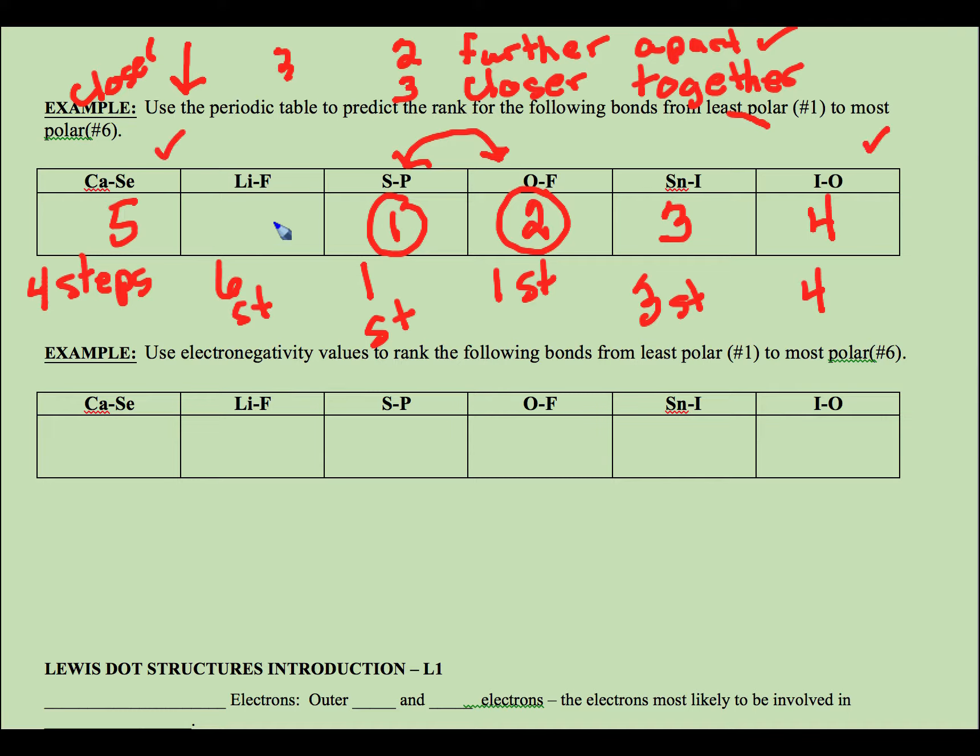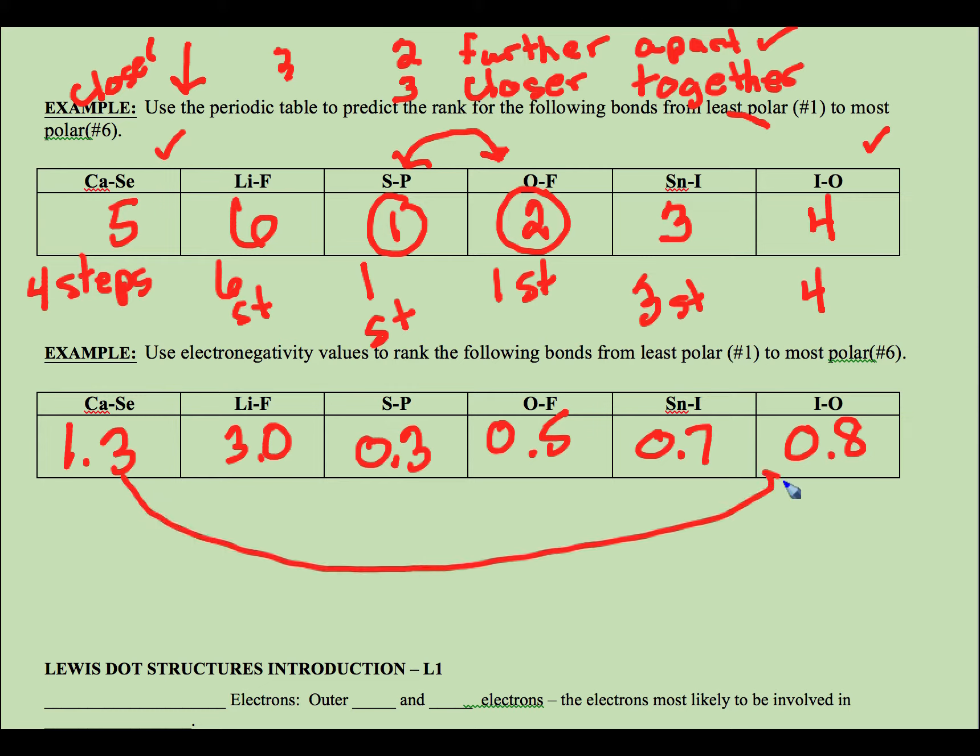These would be really tricky between this and this, and I'm going to call this one number six. Now if we used our difference in electronegativity, 1.3, 3.0, 0.3, 0.5, 0.7, 0.8, okay, so these two that we thought were a tie, I want you to compare how many steps over and up, and I think you'll get a sense of how you can break that tie between calcium selenide and iodine and oxygen without you know having to have values. So this can help us predict.